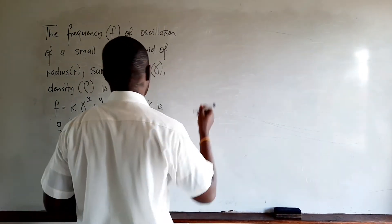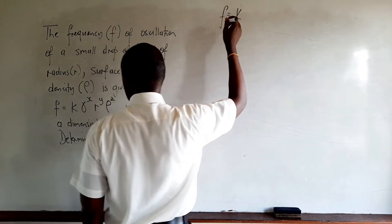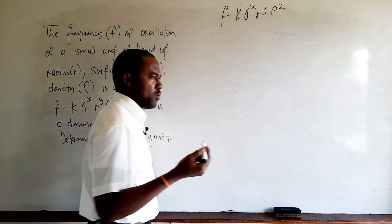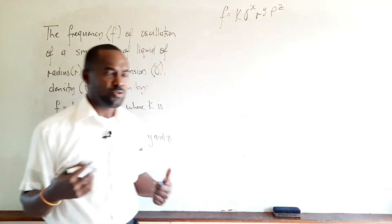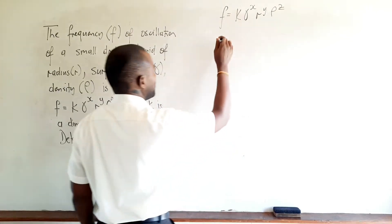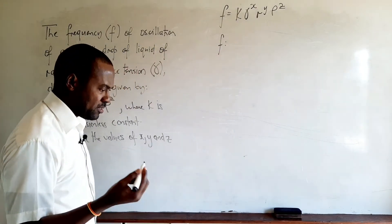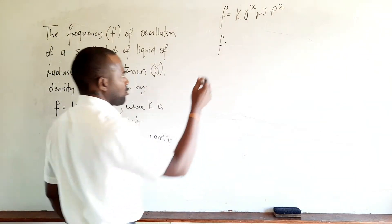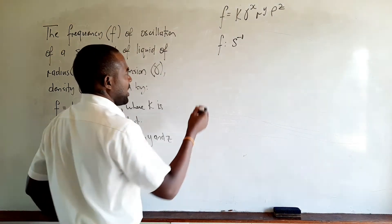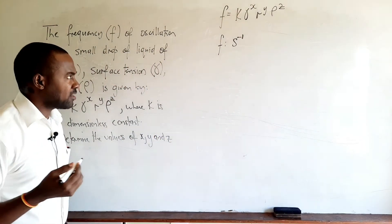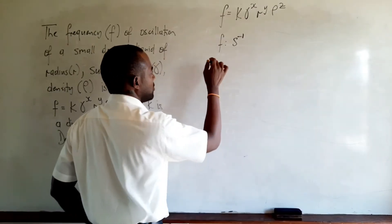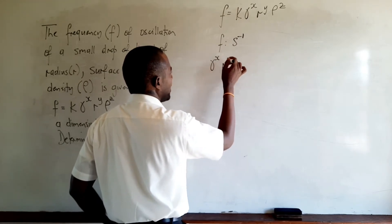We write down the equation: f equals k gamma to the x, r to the y, and rho to the z. We're told that k is a dimensionless constant, which means it has no units, and in checking or analyzing the base units of either side, we'll simply ignore k. The base unit of f, which represents frequency, is the hertz, which is equivalent to per second. On the right, we have gamma to the x, times r to the y, times rho to the power of z.